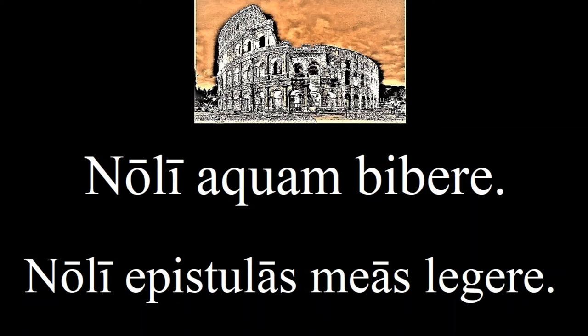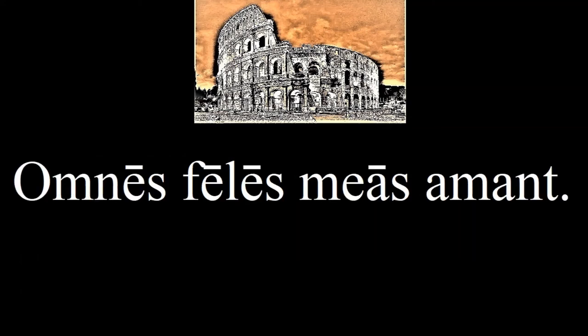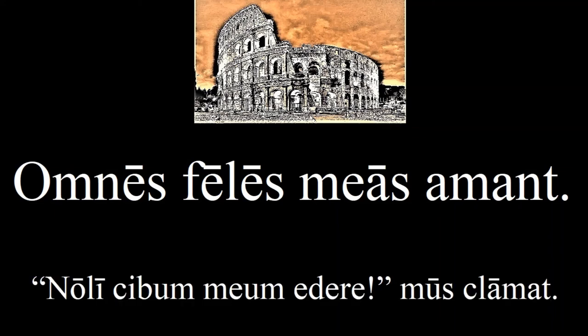But remember that the adjective declines according to the gender of the noun, so they don't always match. For example, cat is feminine in Latin, so we have: 'Omnes feles meas amat' — everyone loves my cats. Another word that will be in the story is at the end of this sentence: 'Noli cibam meam edere, mus clamat' — don't eat my food, the mouse exclaims. It's like making a clamor with your voice, so it can mean exclaim, scream, cry out, etc. We will also see 'edere' in various forms throughout the story, so remember its meaning.